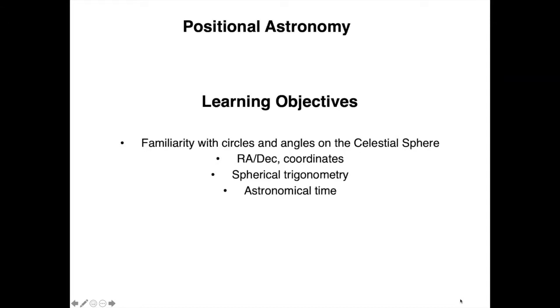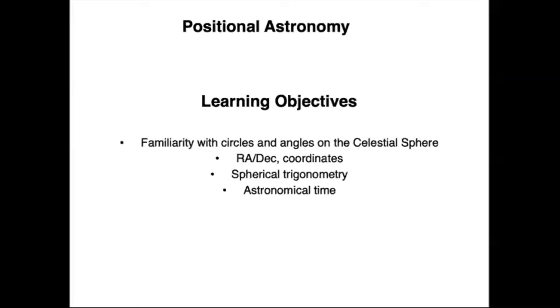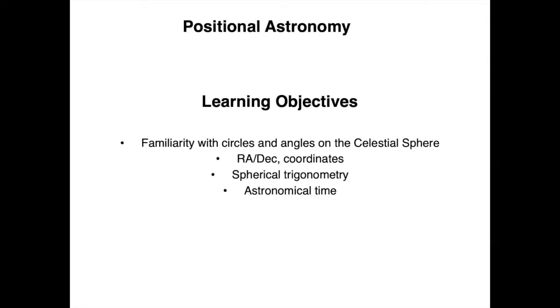Hello students! As promised, this is going to be the first chapter. Let's talk about positional astronomy. The learning objectives of this module are to have familiarity with circles and angles on the celestial sphere, know what right ascension and declination are and all the coordinates defined on the celestial sphere, and get familiar with spherical trigonometry and other concepts such as astronomical time.